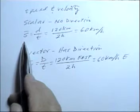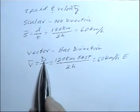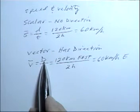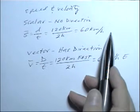speed is calculated using distance, while velocity is calculated using displacement, which gives velocity a direction that speed does not have.